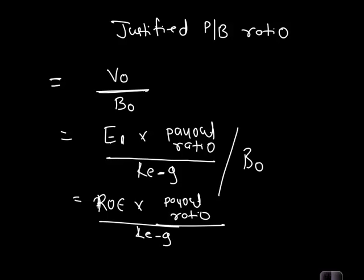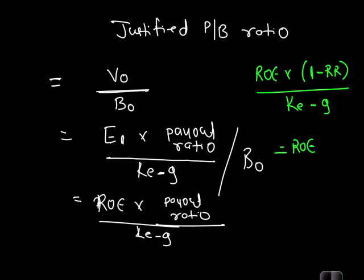Rewriting payout ratio as (1 − retention rate), the formula becomes ROE × (1 − retention rate) / (Ke − G). Since ROE × retention rate equals the growth rate G, this simplifies to (ROE − G) / (Ke − G). This is the formula for the justified price-to-book ratio. Note that trailing or leading distinctions are not typically applied to price-to-book; book value refers to the beginning of the year.